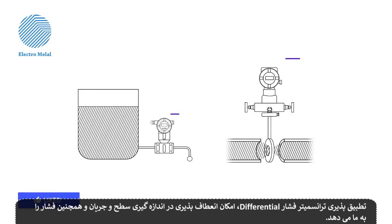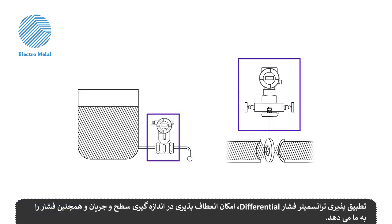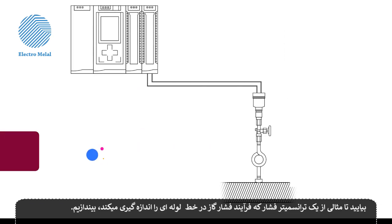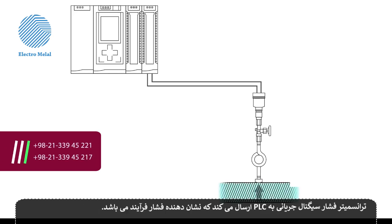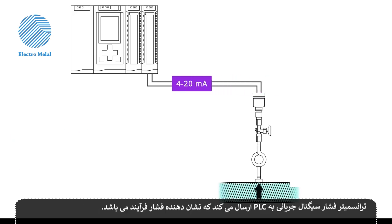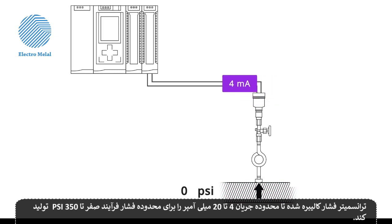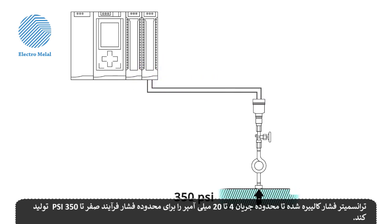The versatility of a differential pressure transmitter gives us the flexibility to measure level and flow as well as pressure. Let's have a look at an example of a pressure transmitter measuring process pressure of gases in a pipeline. The pressure transmitter will send a current signal to the PLC, which represents the process pressure. The pressure transmitter is calibrated to provide a current range of 4 to 20 milliamps for a process pressure range of 0 to 350 PSI.